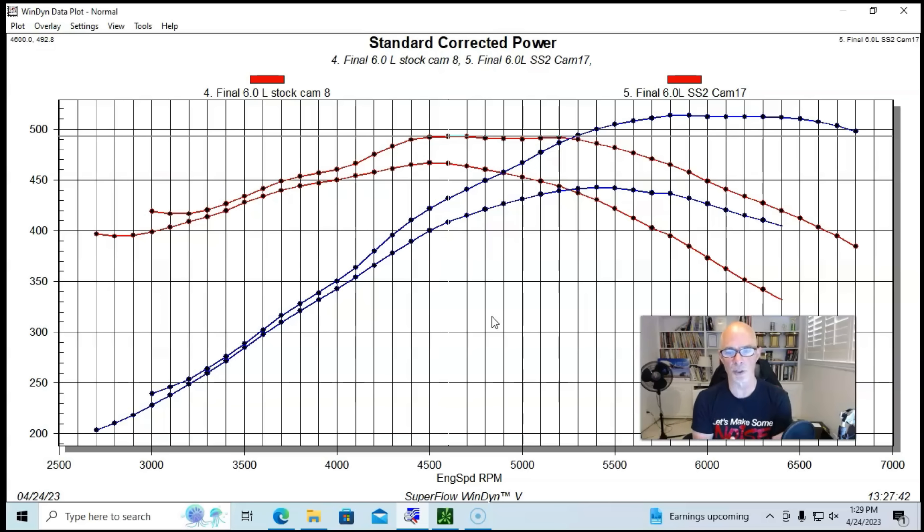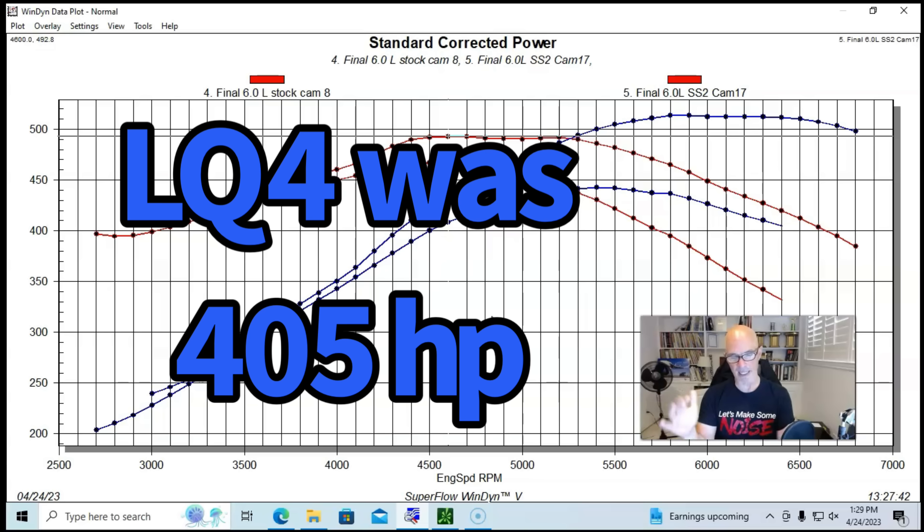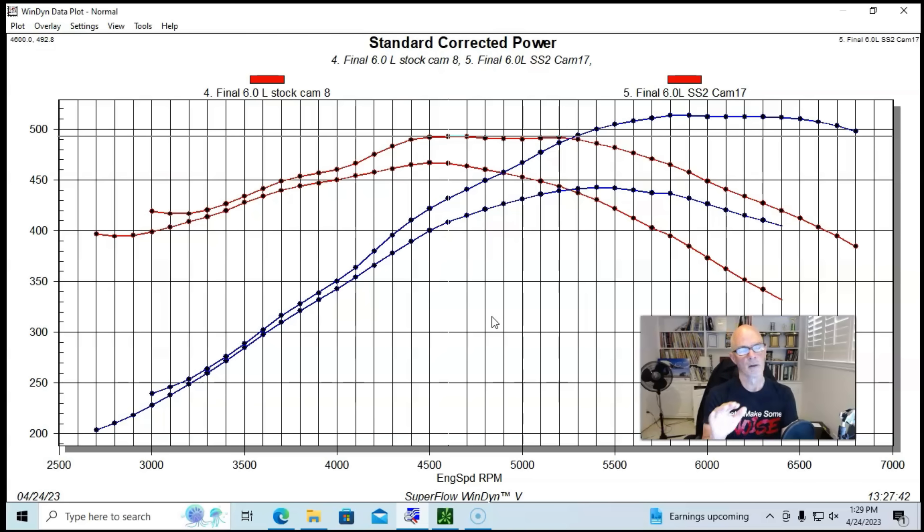In fact, I've run stock cathedral port 6 liters with 317 heads in this kind of camshaft, and they're much closer to 400 horsepower. The rec port heads make an awful lot more power than a factory cathedral port head. And so we kind of limit the power output of a cathedral port 6 liter with that cylinder head.